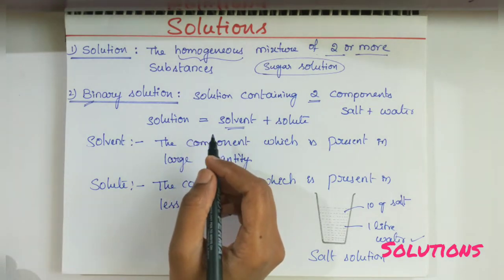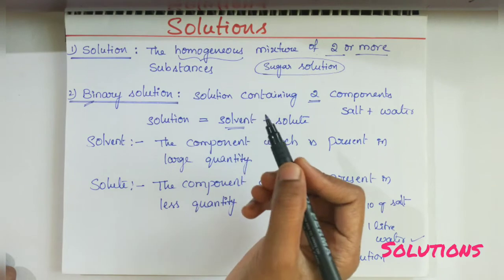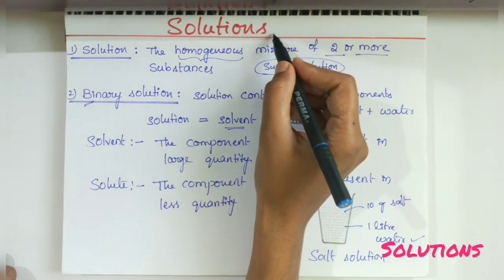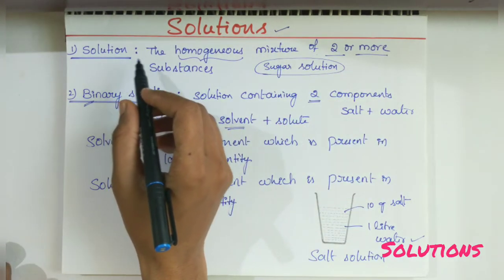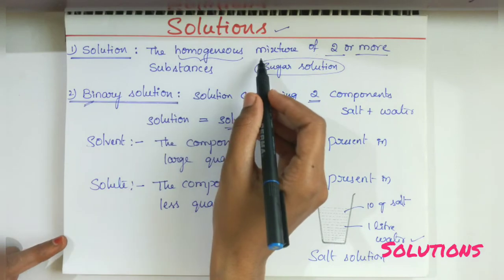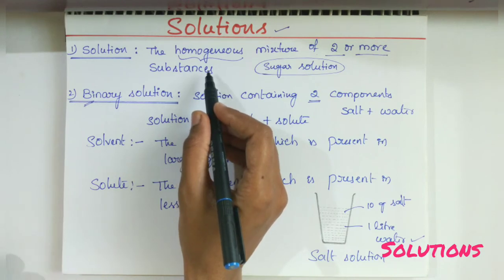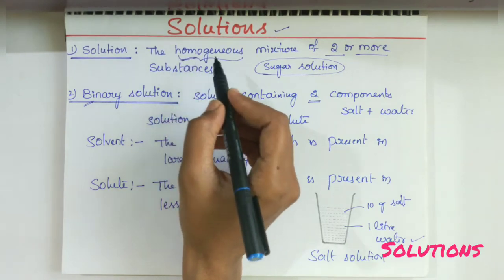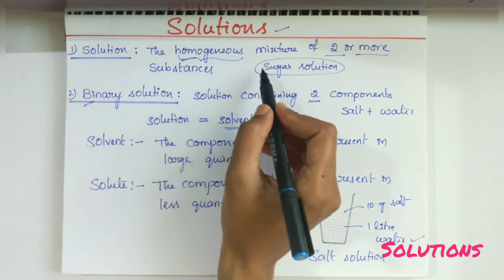Hi students, welcome to Nita's Chemistry. In the last video we discussed about the inter second year chemistry syllabus. Now I am talking about solutions. What is meant by solution? A homogeneous mixture of two or more substances is called a solution. Homo means same, that means uniform distribution of one component into the other component is called homogeneous.